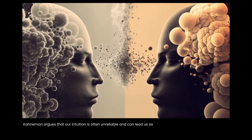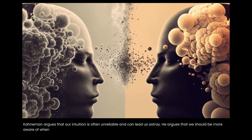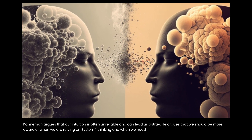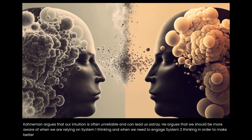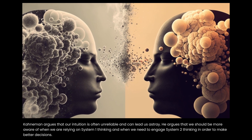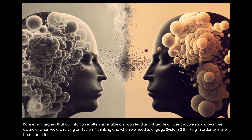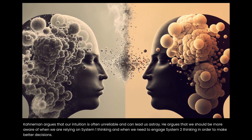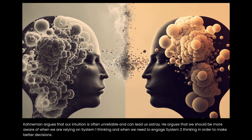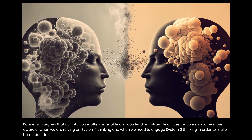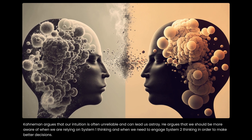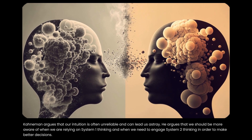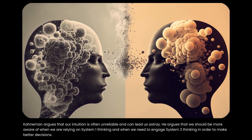Kahneman argues that our intuition is often unreliable and can lead us astray. He argues that we should be more aware of when we are relying on System 1 thinking and when we need to engage System 2 thinking in order to make better decisions.